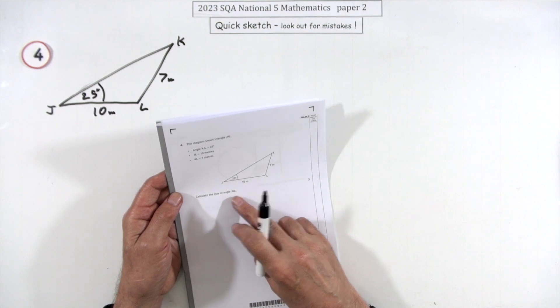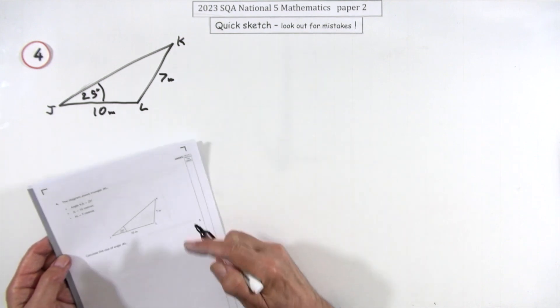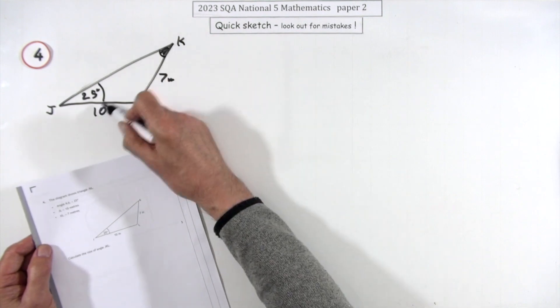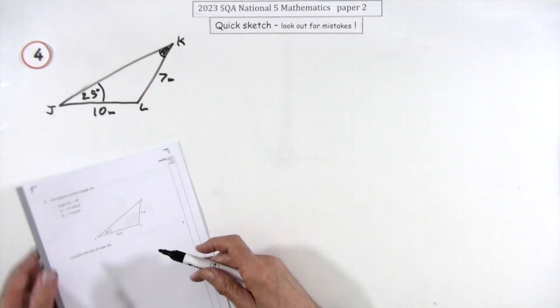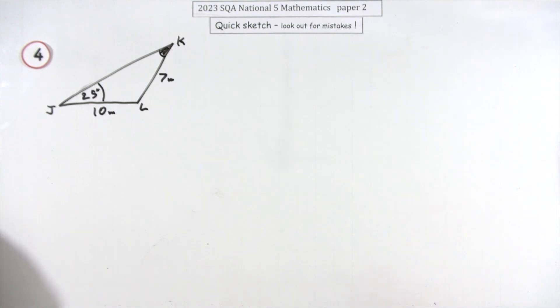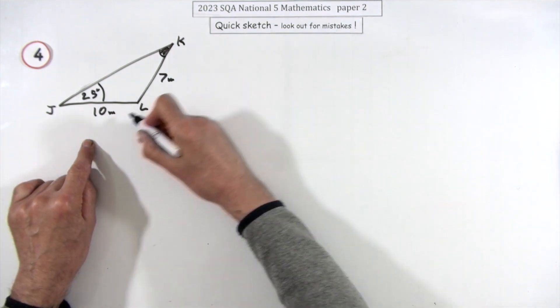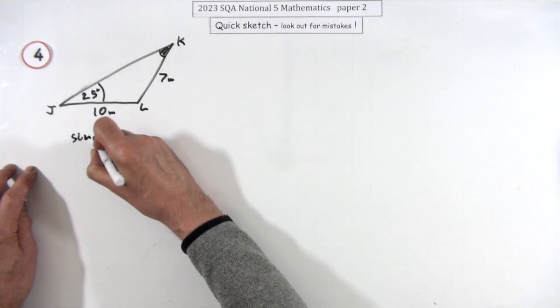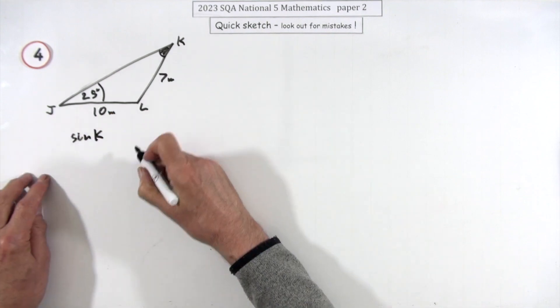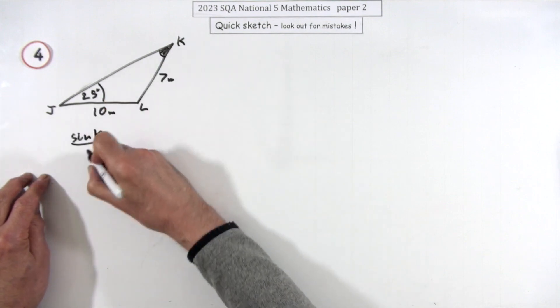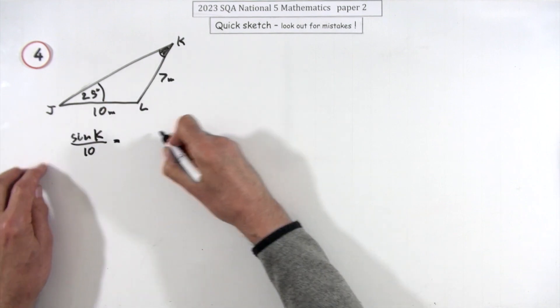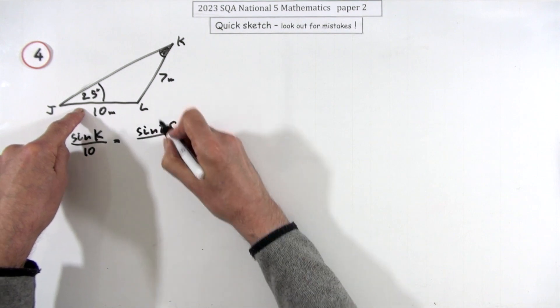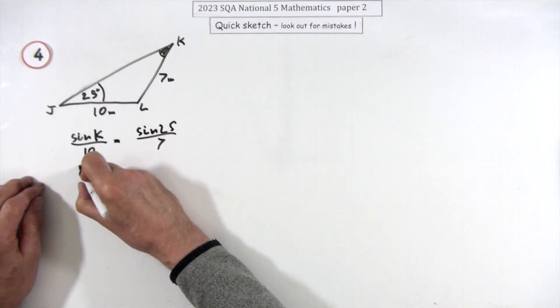Number four. Calculate the size of angle JKL. JKL, that's this one here. So that's the straightforward one because that's the pairing with the 10, it's going to be the same rule then. But I think I'll put the same rule the other way around because it's the angle I want. So I'm going to start off with the unknown in this position. The sine of K over its partner length, which is 10, will be the pair that you know. The sine of 25 over its partner length 7. And then just rearrange that.